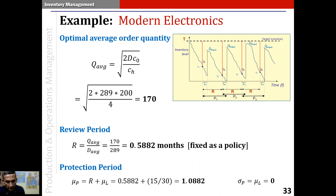Next, the protection period. The average protection period is the review period plus the average lead time. In this example, the lead time is given as a constant 15 days, so the lead time in months is 15/30 = 0.5. Therefore, the average protection period is 0.5882 + 0.5 = 1.0882 months. Since the lead time is constant and so is the review period, the protection period is also constant, and σ_l = 0.